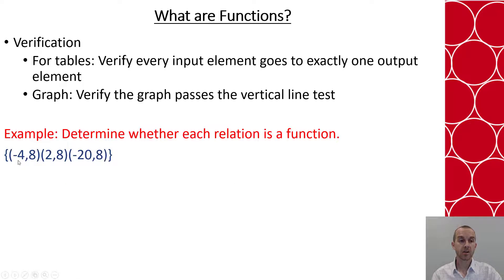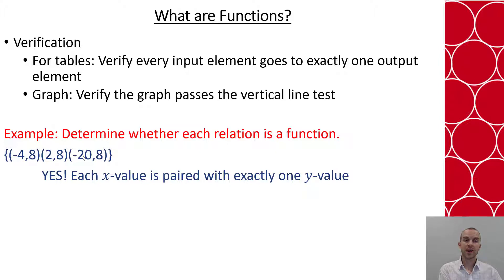Now here this sometimes will throw people because they all share the same Y value, but it's not about the output it's about the input, and each input negative 4, 2, and negative 20 go to exactly one output so this is a function. And if you graph them you would have them aligning horizontally so they would pass the vertical line test as a graph.